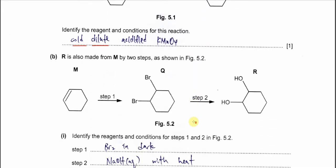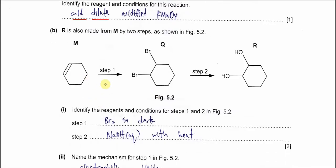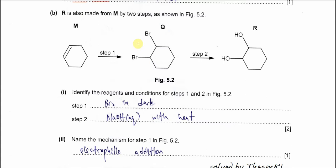And for part B, R is also made from M by two steps as shown in figure 5.2 here. Part 1. Identify the reagents and conditions for step 1 and step 2. Step 1 is what? Step 1 is this cyclohexene from this halogenoalkane.